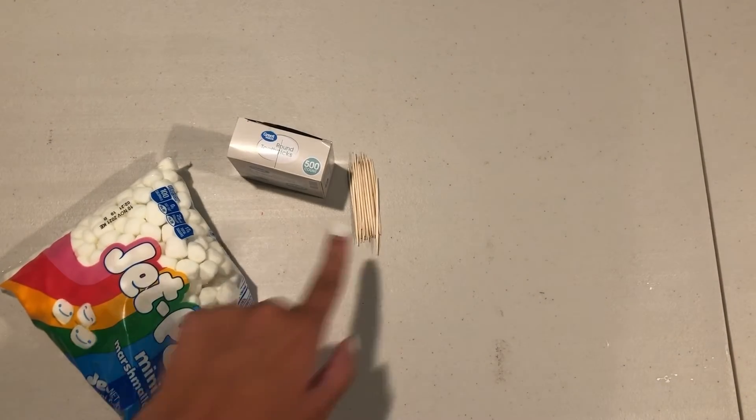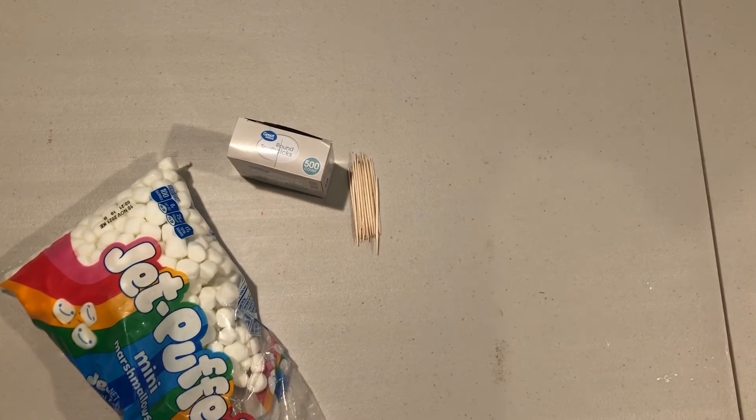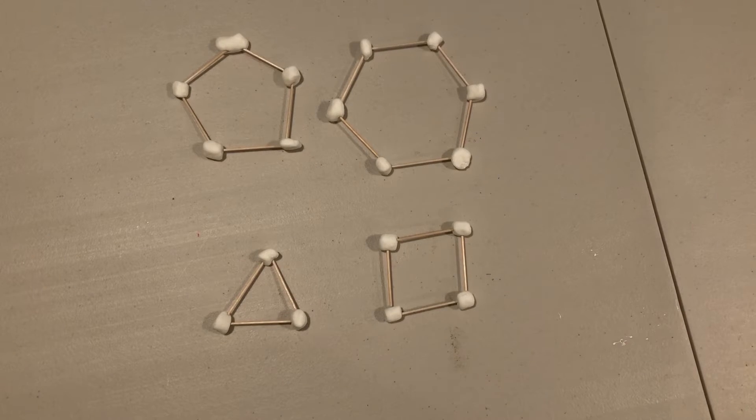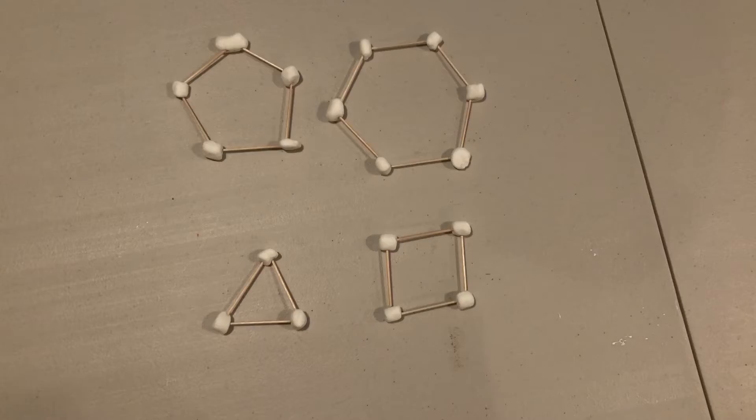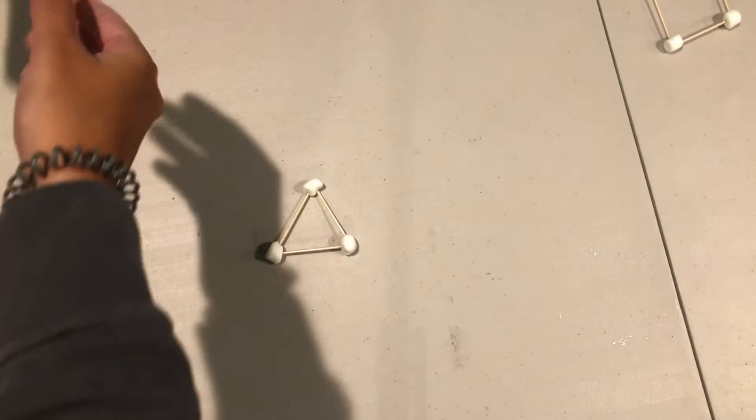The materials for this are toothpicks and mini marshmallows. First, we're going to explore different shapes to see which shape we want to use for our tower. Now try and build a tower with triangles.